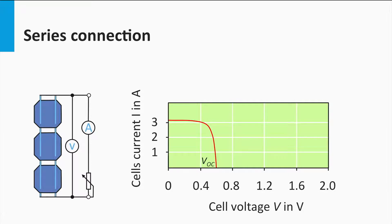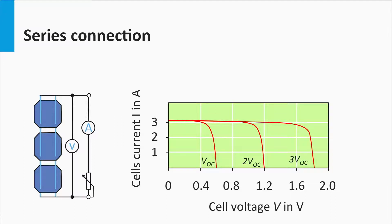Let's look at the JV curve of solar cells connected in series. If we connect two solar cells in series, we can add up the voltages; however, the current remains the same. The resulting open circuit voltage is two times that of the single cell. If we connect three solar cells in series, the open circuit voltage becomes three times as large, whereas the current is that of one single solar cell.